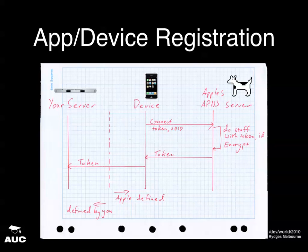Now we're going to talk about the actual mechanics — an overview of how it works. There are really three parties to push notifications: your server, the device, and Apple's APNS server — or more likely a server farm. There are two stages: there's the whole registration and token exchange, and then there's sending and receiving notifications.